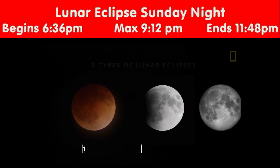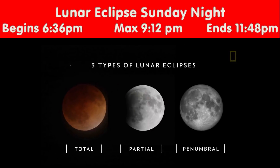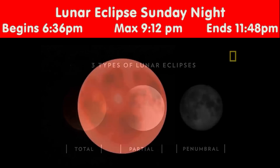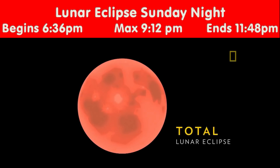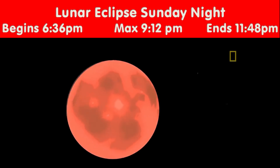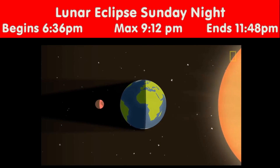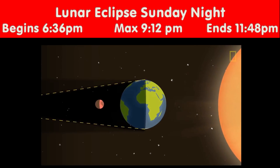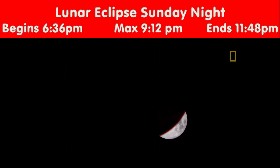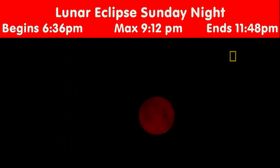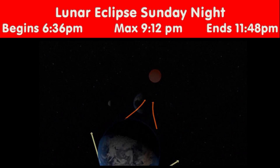There are three types of lunar eclipses. The first is a total lunar eclipse, when the Sun, Moon, and Earth are in perfect alignment and the Moon falls within the Earth's umbral shadow. Total lunar eclipses are the most striking of the three types because they turn the Moon a sunset red.